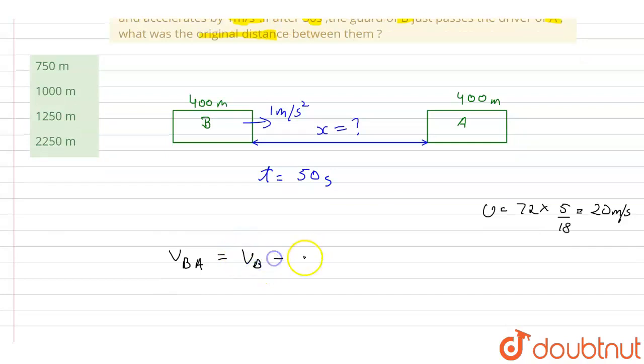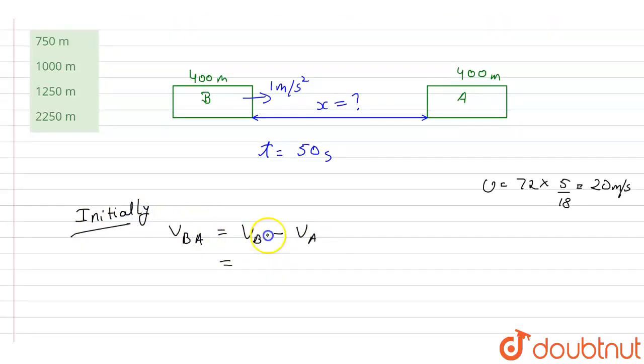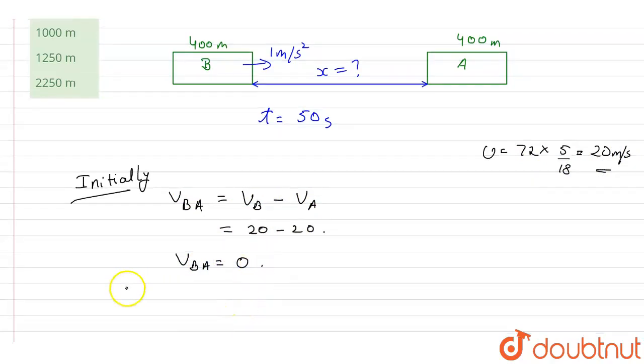vB minus vA. This will be the initial velocity, initially when the train is not accelerating. In that case, vB and vA both are 20 meters per second and moving in the same direction, so this will be equal to 20 minus 20. Therefore, vBA will be equal to zero.